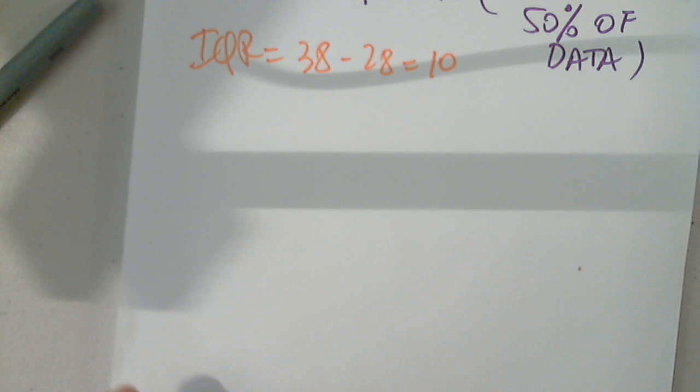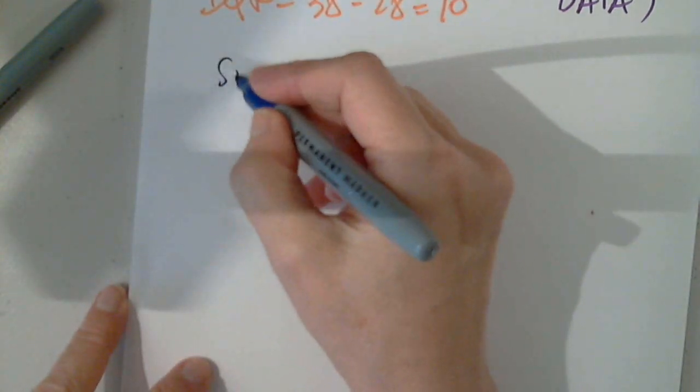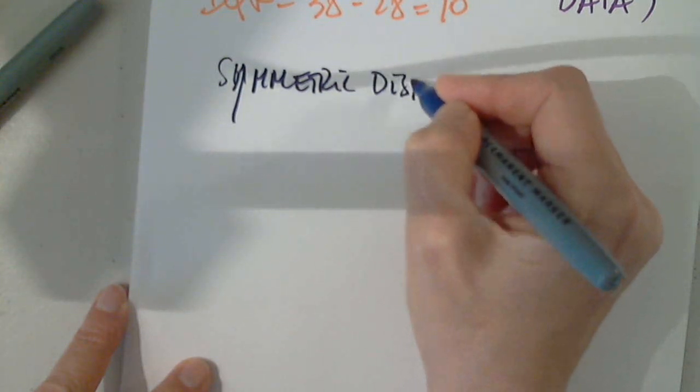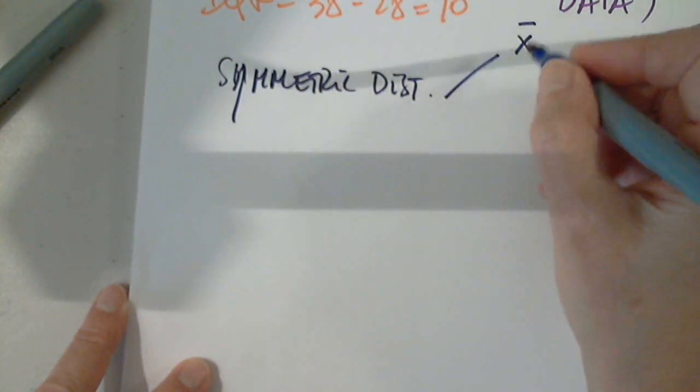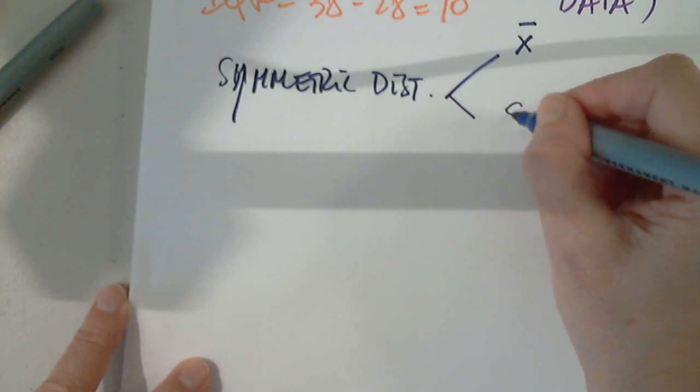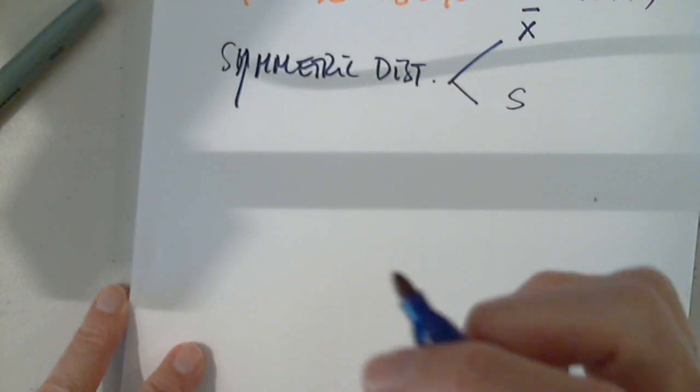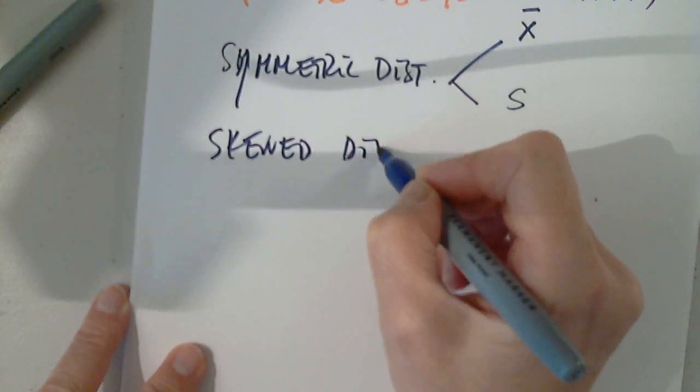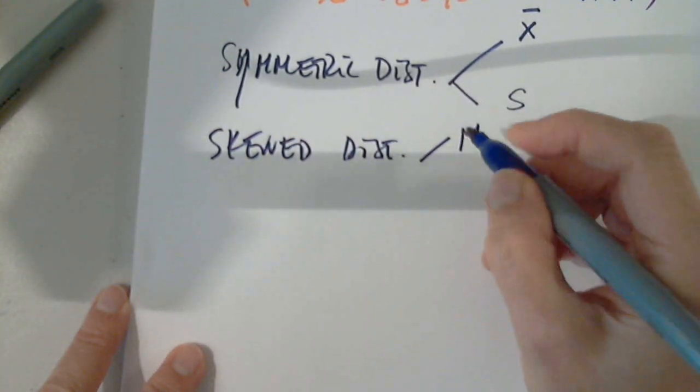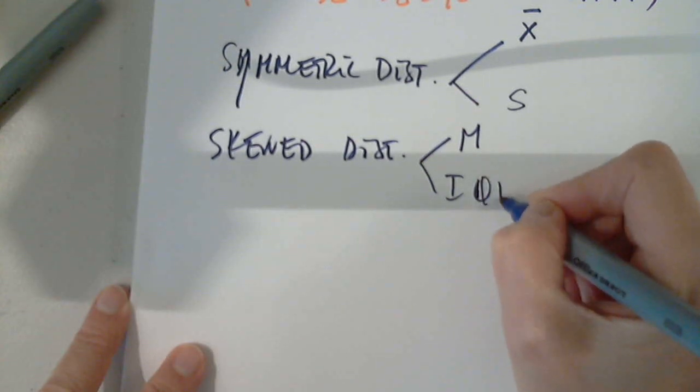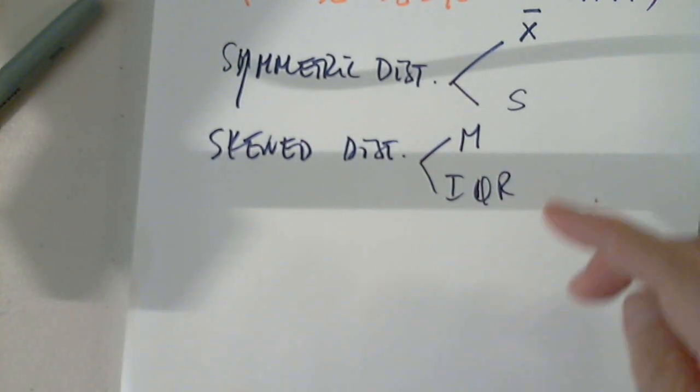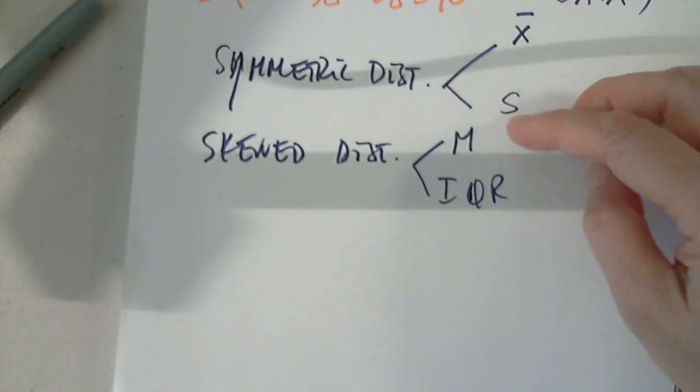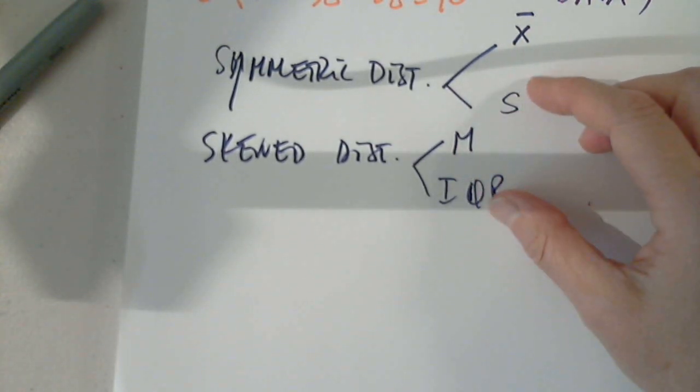So, let me write this one more time for you. For symmetric distributions, we use the mean and the standard deviation. For skewed distributions, we use the median and the IQR. Of course, the mean and the median for central tendency and the standard deviation and IQR for dispersion.